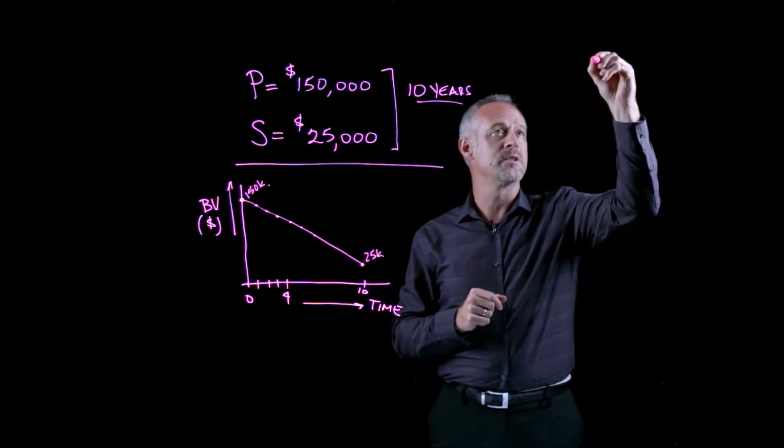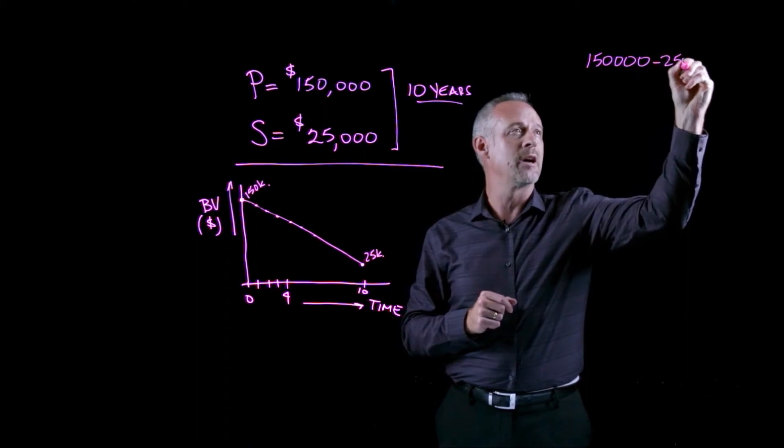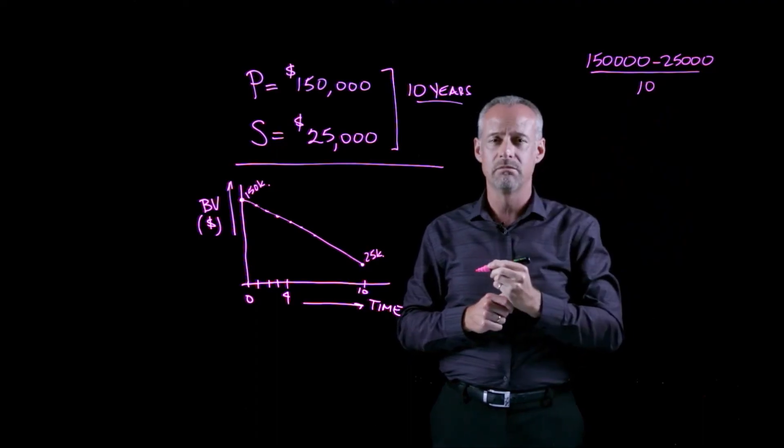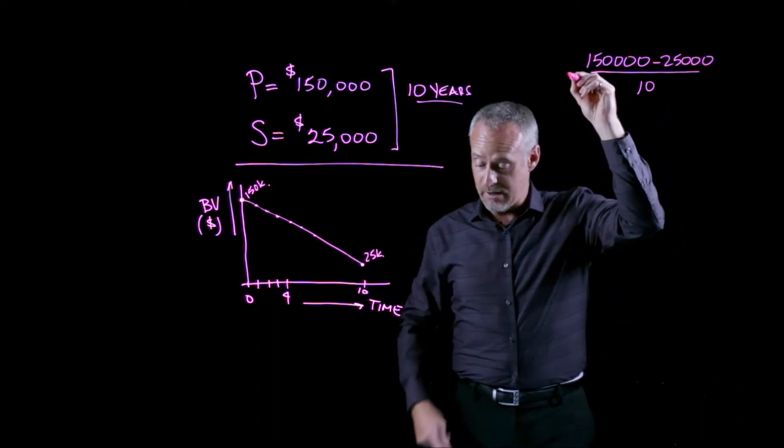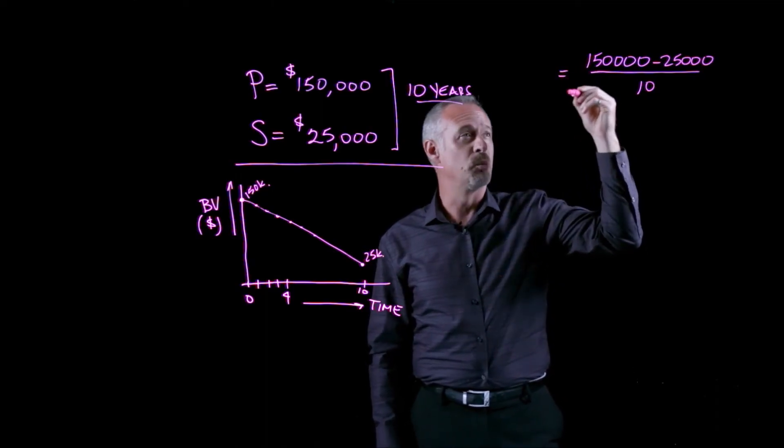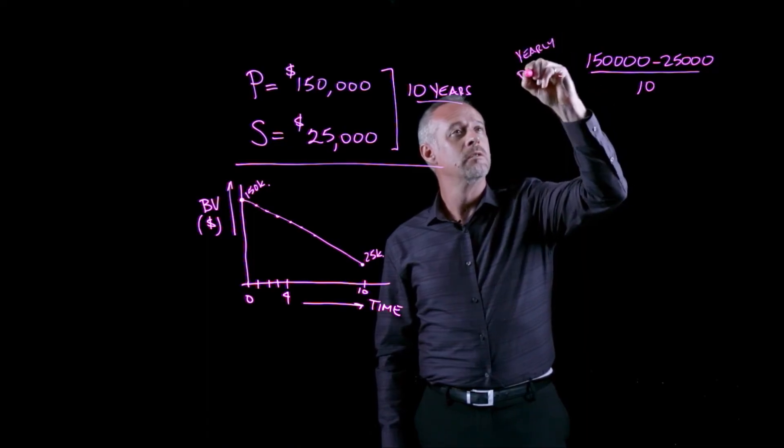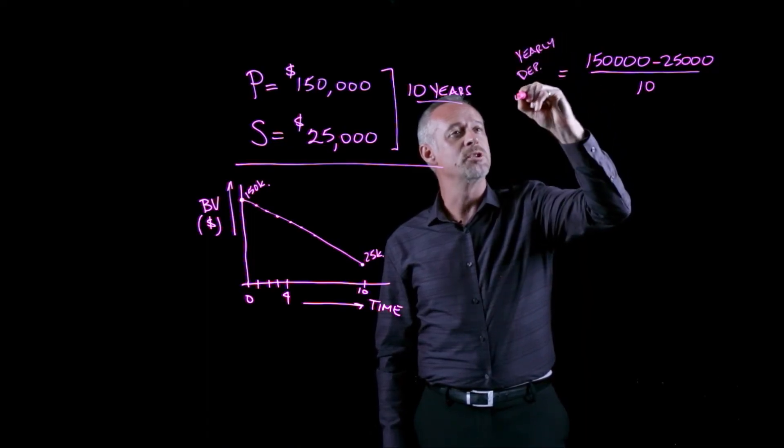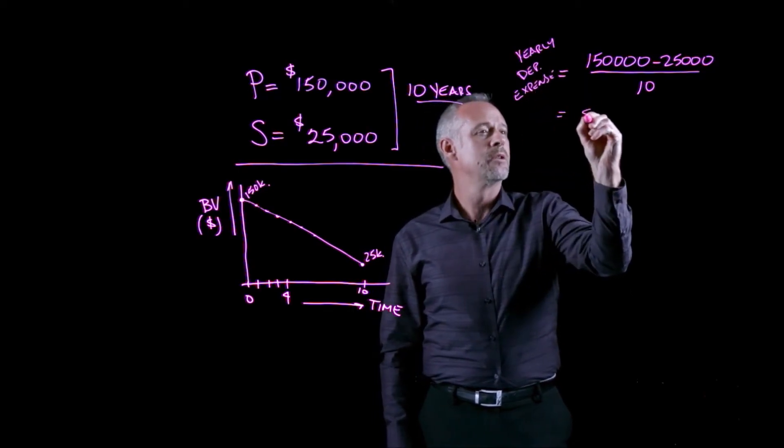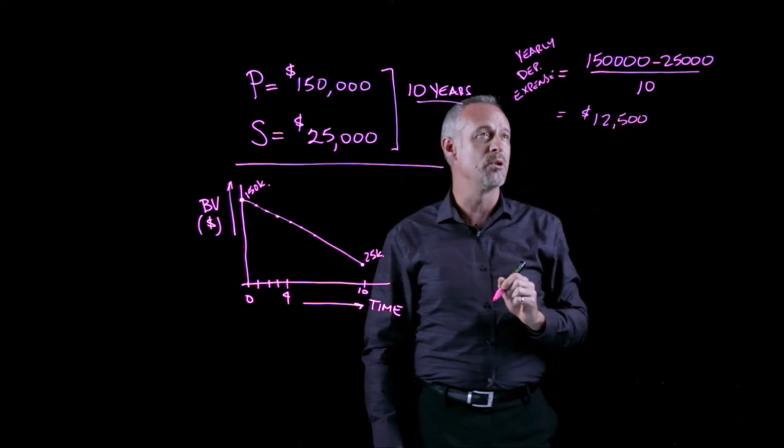The simplest way to think about that would just be to say I'll take a hundred and fifty thousand minus twenty-five thousand and divide by ten years. And I can refer to that really as the yearly depreciation expense. And in this case, this would be twelve thousand five hundred dollars per year.